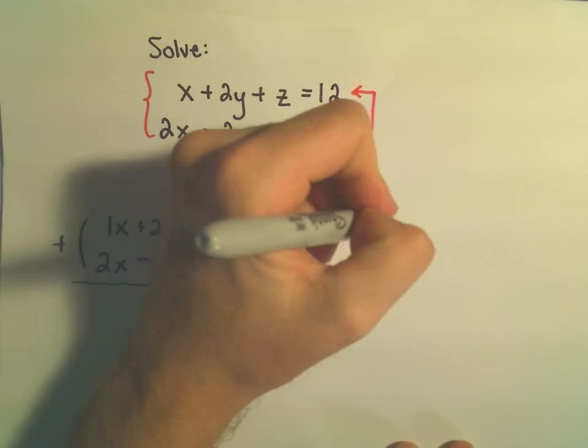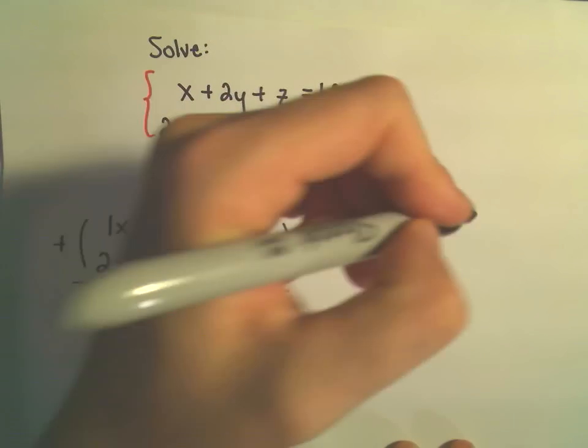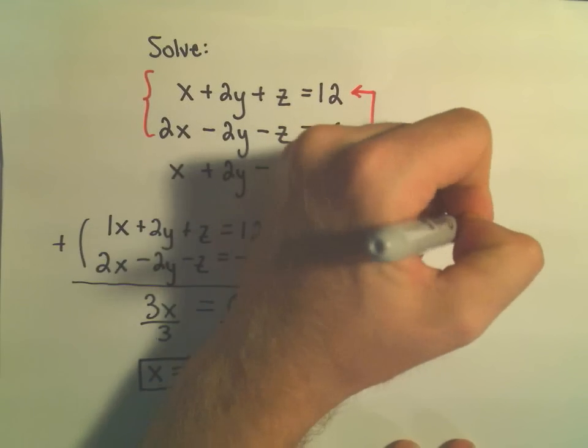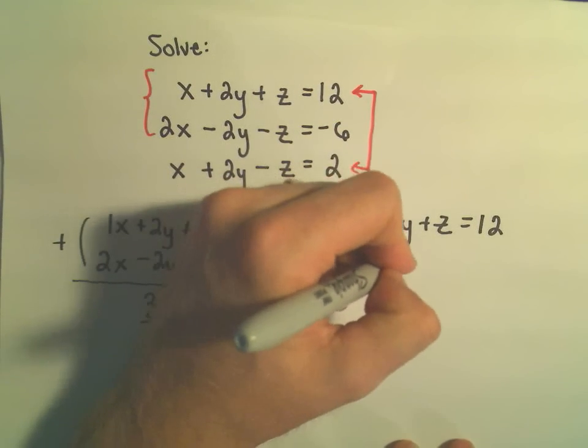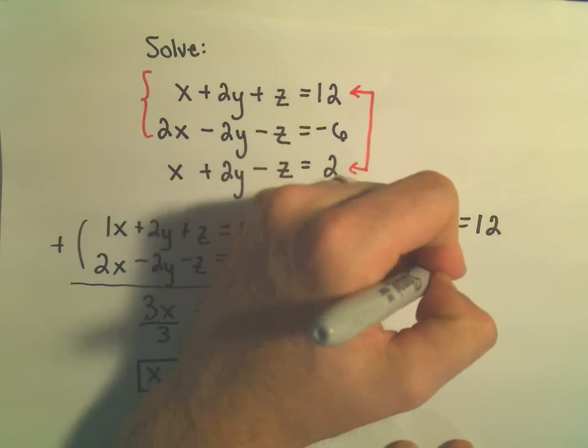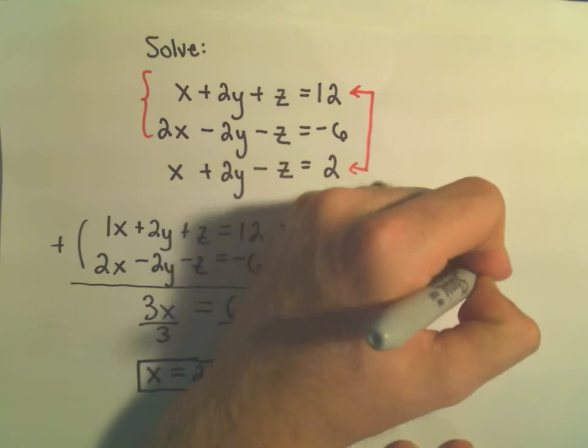So, I'm going to use x plus 2y plus z equals 12, and then I'm going to use my third equation, x plus 2y minus z equals 2.